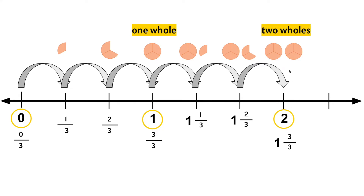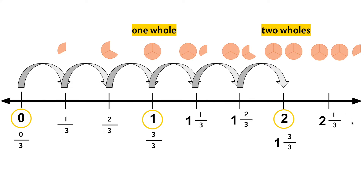The next whole number would be 3 — we can't see it, but we know it's there. So let's continue adding thirds. Now we have 2 wholes and we're adding a third, so the next mixed number is 2 and 1/3. After that, we have 2 and 2/3.